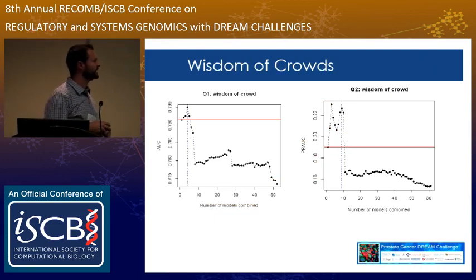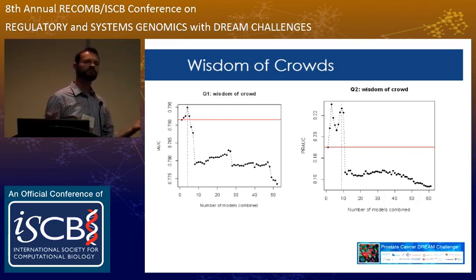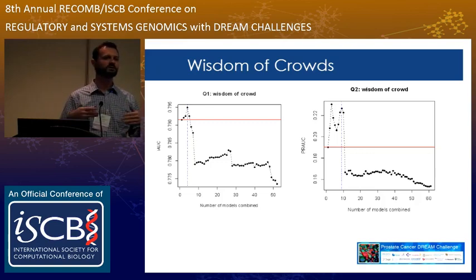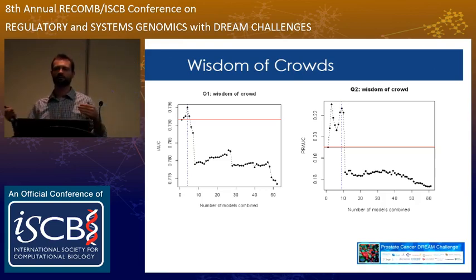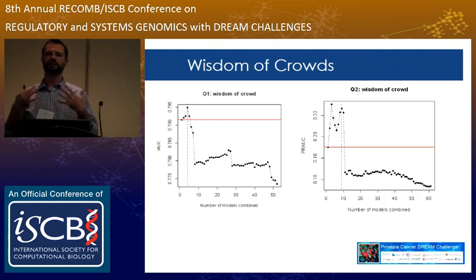What would DREAM be without the wisdom of the crowds? As in all previous challenges, we find that aggregating predictions from the top-performing teams gives more robust overall performance than any individual performer. Sub-challenge one showed a slight increase in performance from aggregation, but not as much as sub-challenge two — which suggests more room for improvement there and that leveraging the community can actually gain performance overall.